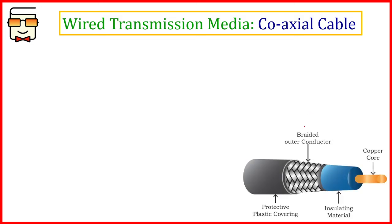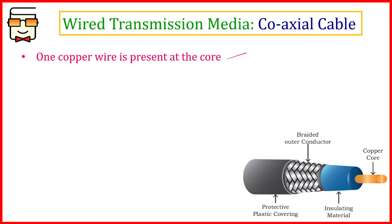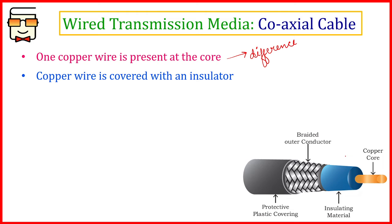Now let's look at the coaxial cable. As you can see from the diagram, its structure is very different from a twisted pair cable. The biggest difference is that a coaxial cable consists of just one copper wire — this single copper wire forms the innermost core.